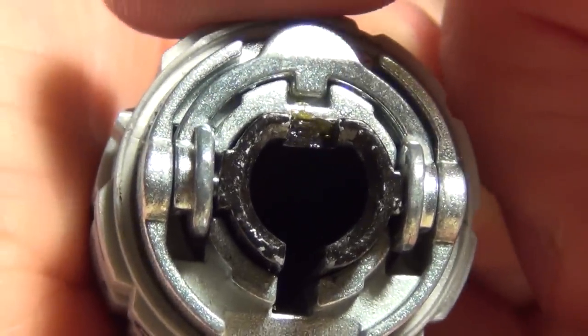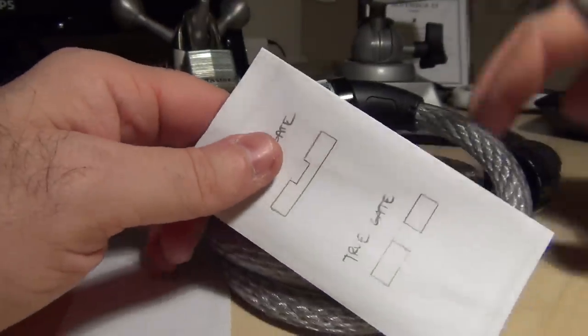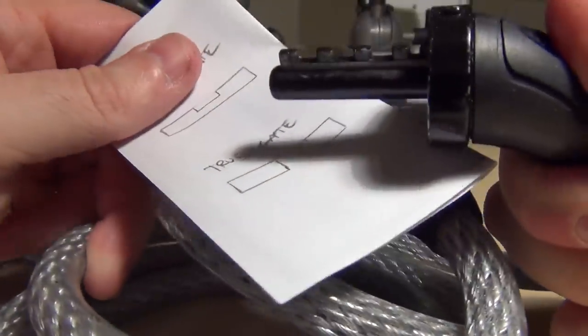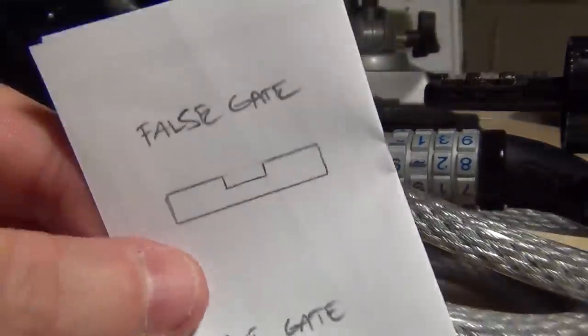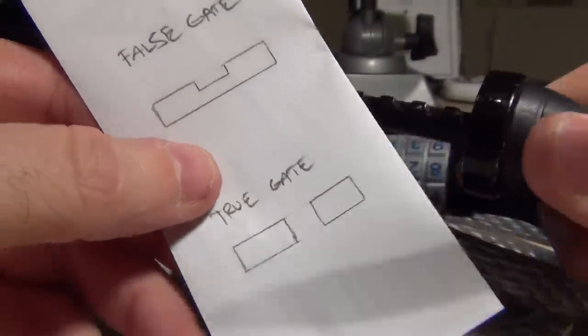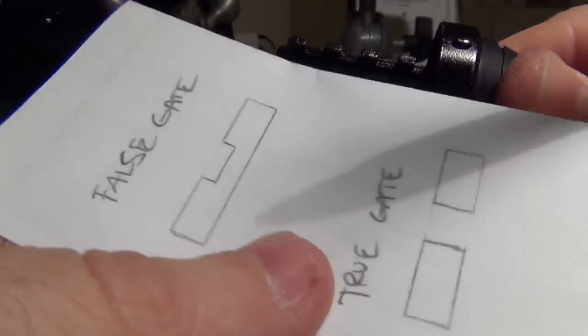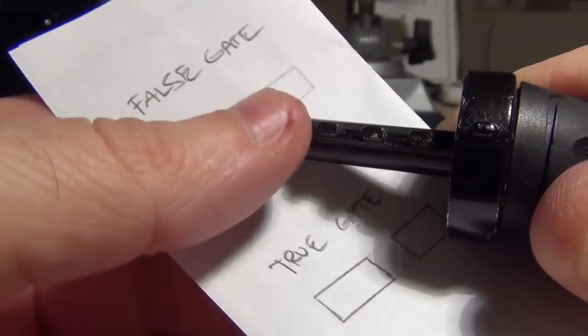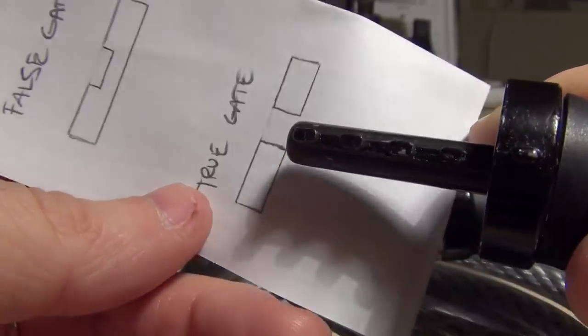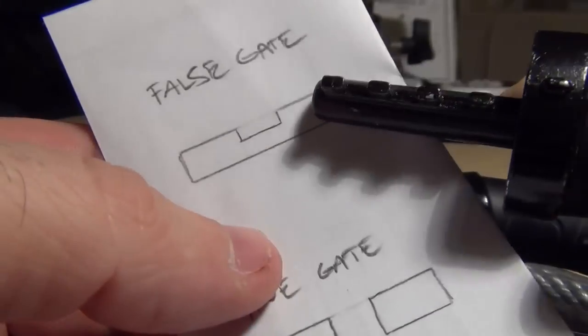So you get an idea of the middle portion of the lock. Let me zoom out here. So here is actually what that looks like. I've got like a little drawing of what a false gate and a true gate would kind of be like. So if we're pulling this out, right, it would get bound up. These little teeth would get bound up on the false gates, whereas if it was a true gate, it would just slide right out of there.